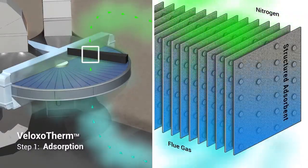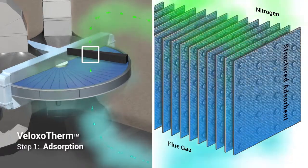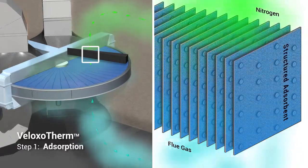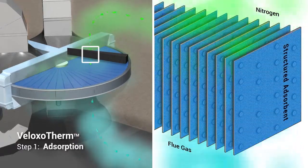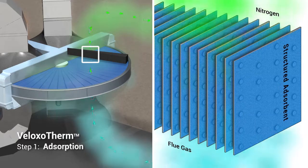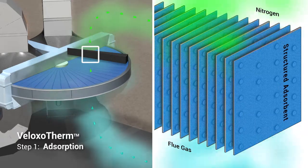The flue gas enters the ram and contacts the Veloxytherm structured adsorbent. CO2 is adsorbed, while other gases pass through.